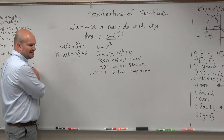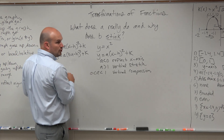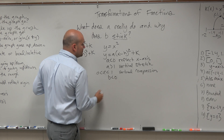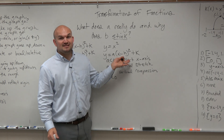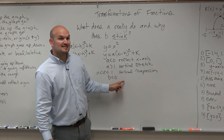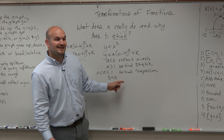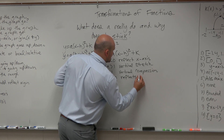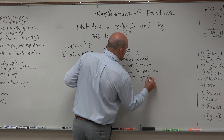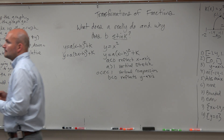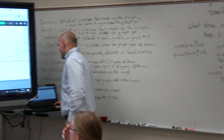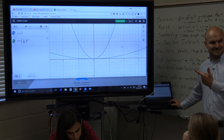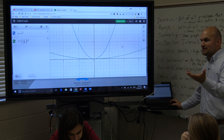B messes everything up. When A is less than 0, it reflects the x-axis. When B is less than 0, it reflects the y-axis. Now, x squared is probably not a good function to use because that's already symmetric about the y-axis — so you wouldn't know the reflection is occurring.